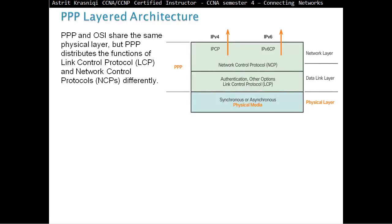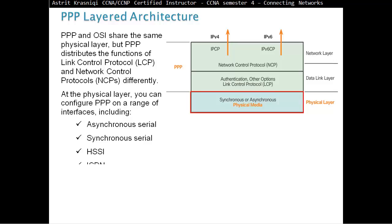The PPP layered architecture. The PPP and OSI share the same physical layer. But PPP distributes the function of LCP, or Link Control Protocol, and Network Control Protocol, NCP, differently. At the physical layer, you can configure PPP on a range of interfaces, including Asynchronous Serial, Synchronous Serial, HSSI, ISDN. The only absolute requirement imposed of PPP is a full duplex circuit, either dedicated or switched.